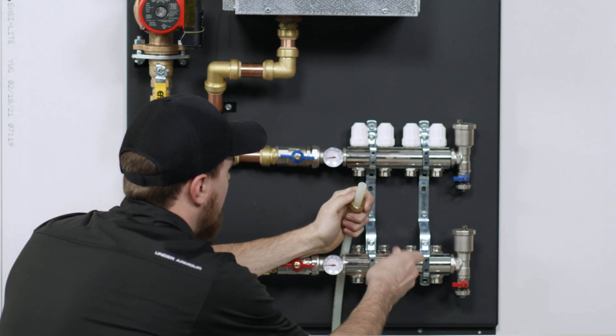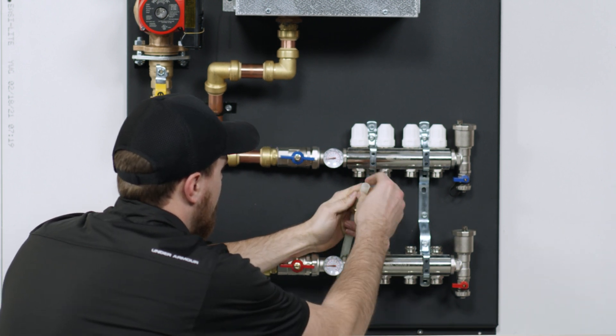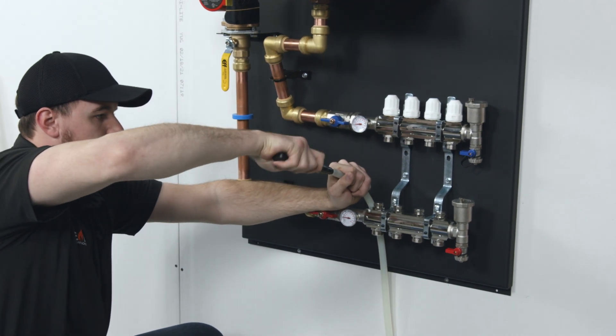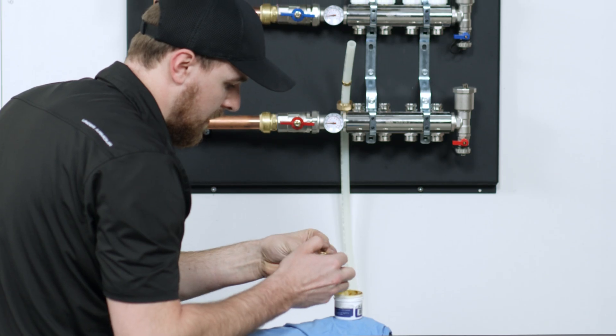Slide the nut and split ring onto the pipe. Ream the pipe and grease the manifold adapter O-rings.